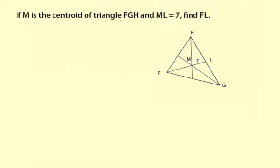If M is the centroid of triangle FGH and ML equals 7, find FL.